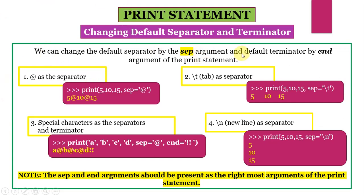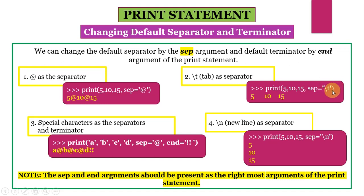Now suppose we want to change the default separator and terminator of the print statement. It can be done easily using the sep argument and the end argument. Suppose I want to give @ as the separator instead of single space. So my print statement will look like: print(5, 10, 15, sep='@'). You can see the output is 5@10@15. Now suppose I want to separate all three numbers by tab instead of space. I will give: print(5, 10, 15, sep='\t'). You can see the output — 5, 10, and 15 are all separated by a tab.